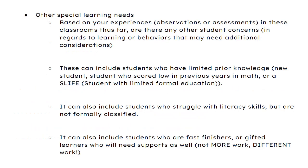The category of other special learning needs is based on your experiences in observations or assessments in your classroom so far. Consider any student concerns regarding learning or behavior that may need additional consideration. Think about students with limited prior knowledge — this could be a new student, a student who scored low in math the previous year, or a student also known as an SLIFE, which is a student with limited formal education. These students do exist and we have to be prepared for them. Think about a student in an accelerated or typical class who is struggling and how you can help those with a limited background knowledge of math or who didn't master skills from the previous year.